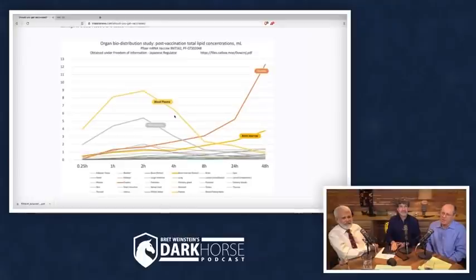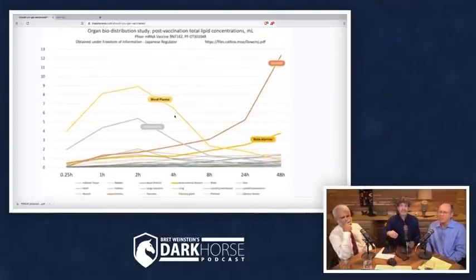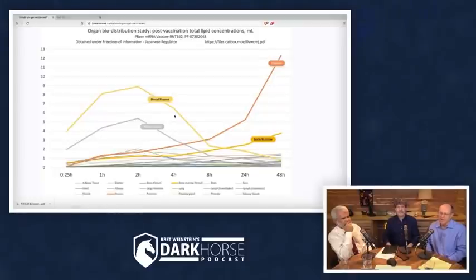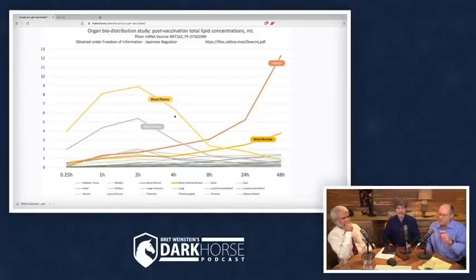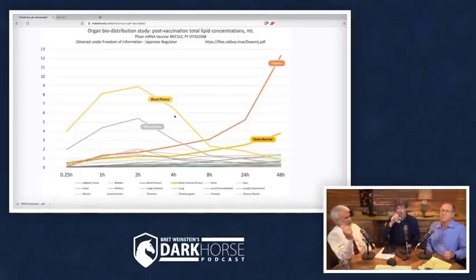Byram Bridle did a freedom of information request of the Japanese government for the Pfizer data, and he got a biodistribution chart. I'm pretty sure I linked to the original data in my paper. This graph was created from that Pfizer data — it's not the Pfizer data itself from the Pfizer study, it's a summary graphic. People have double-checked and triple-checked this. I did review the primary data, and I concur that it is consistent with the graph.